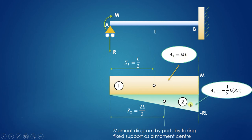For the triangular distribution, the area is one-half times base times height. The base is L and the height is RL, but since RL is the moment in the anticlockwise direction, it is considered negative. So this area A2 is negative: minus one-half into L into RL.